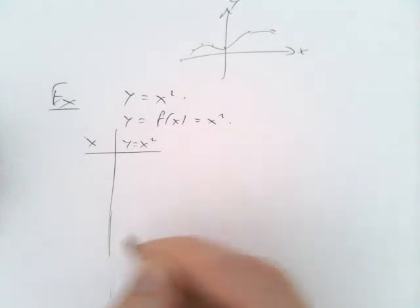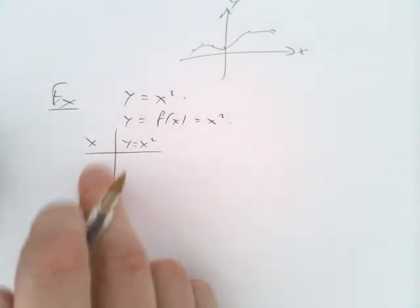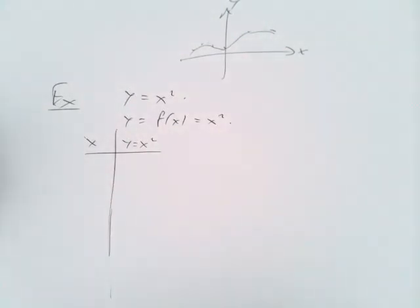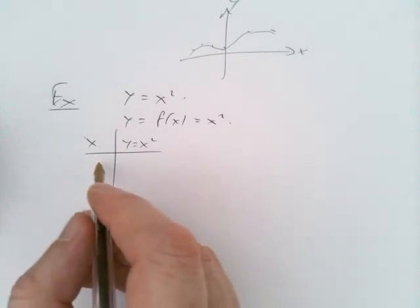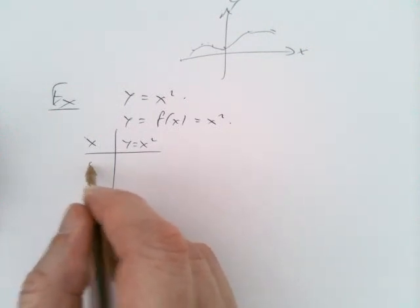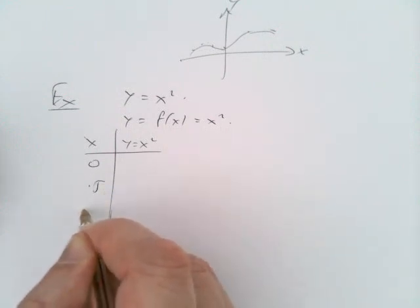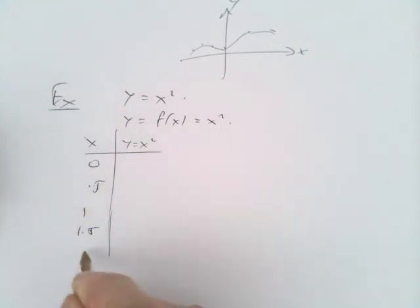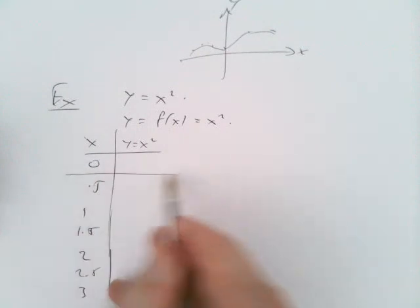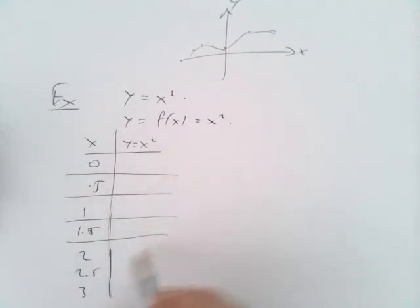We'll pick a bunch of points. There's no simple rule, so we just have to give it a try. Let's make some choices: 0, 0.5, 1, 1.5, 2, 2.5, and 3. And then see what values come out of the other side.